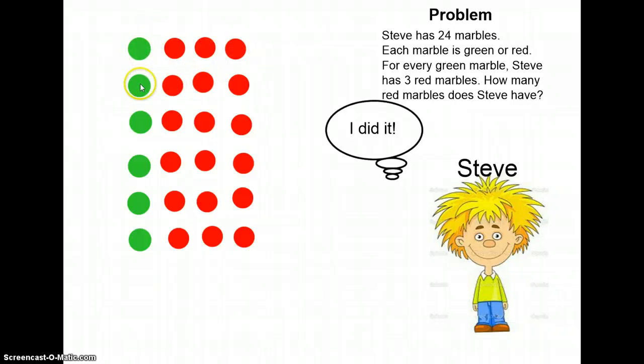We have one, two, three, four, five, six green marbles. We have three, six, nine, twelve, fifteen, eighteen red marbles. And we know that six plus eighteen is twenty-four, so we have the correct answer. There are eighteen red marbles and we have twenty-four marbles total. Great job, Steve. Great job, fourth grade.